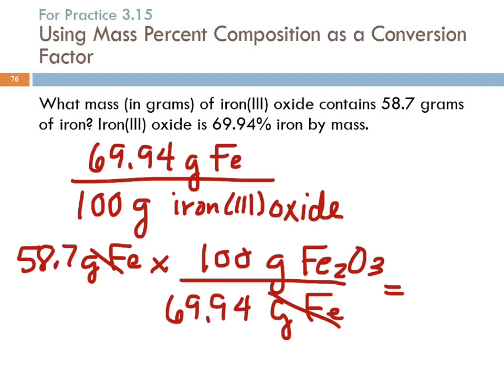If you're good with percentages, you can probably do a problem like this without even really thinking about it. But I'm talking to those who are not good with percentages. So 58.7 times 100 divided by 69.94. And how many significant figures would this have? Three. Our starting mass, 58.7, is three sig figs. So 83.9 grams. Is that a physically reasonable number? Could 83.9 grams of the compound contain 58 grams of one of the parts? Yeah. If this number comes out smaller than that, something went wrong.